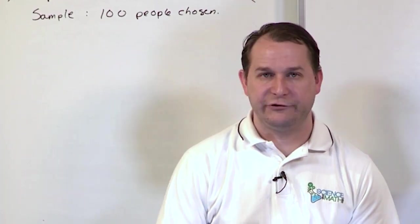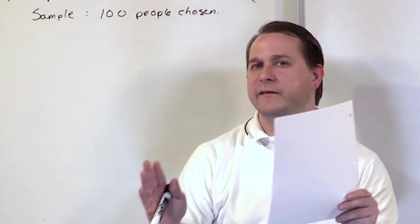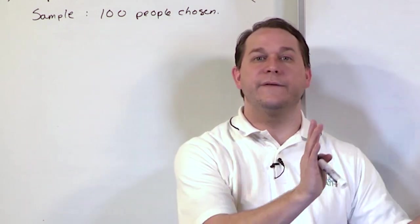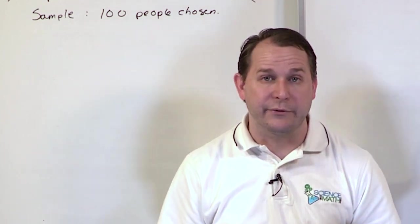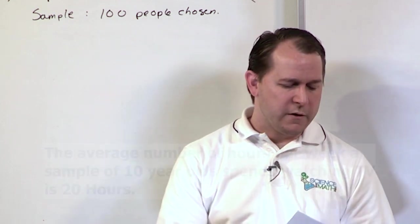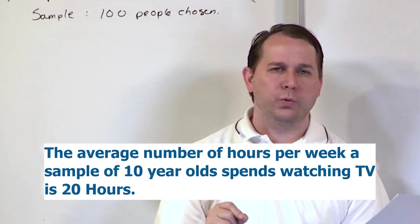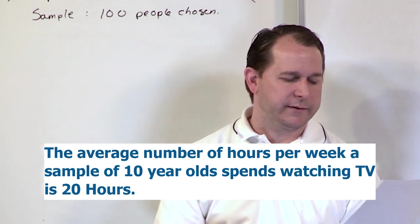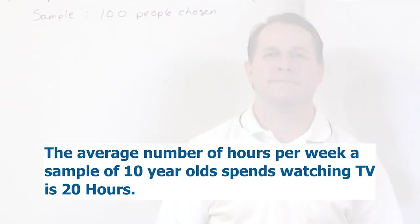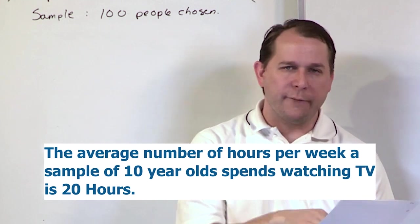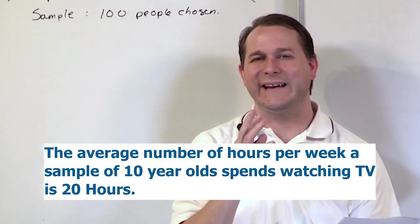Now in the next question, what we want to do is shift gears a little bit. Remember, we talked about parameters and statistics. Parameters deal with describing the population. Statistics deal with describing the samples, which are our little surveys that we do. So the question is, the average number of hours per week that a sample of 10-year-olds spend watching TV is 20 hours. The question is, of what we've written here, what does it represent? Is it a statistic or is it a parameter?